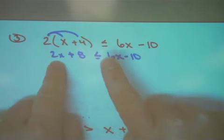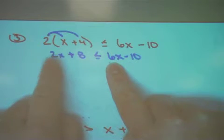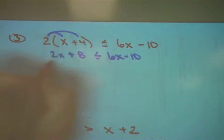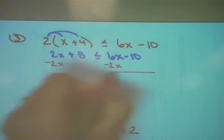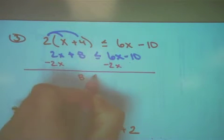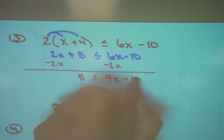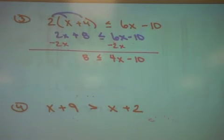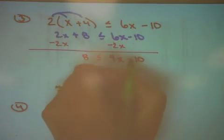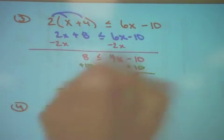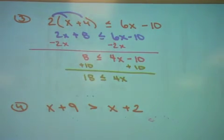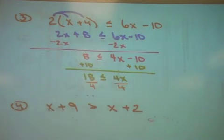Who's smaller, 2x or 6x? 2x is smaller. How do I move a positive value? I'm going to subtract it from both sides. So now positive 8 is less than or equal to 4x minus 10. Now I need to get the 4x alone by adding 10 to both sides. 18 is less than or equal to 4x. Now I'm going to get the x alone by dividing both sides by 4.